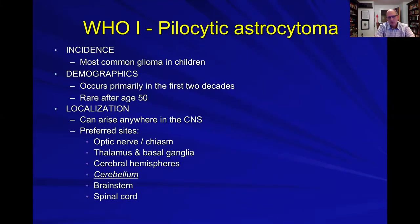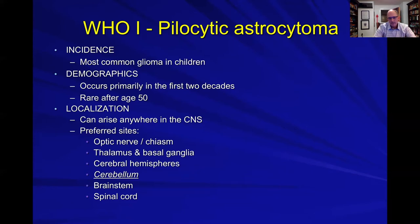Here's a prototypical WHO Grade 1 glioma: the pilocytic astrocytoma. It's much more common in children, occurring primarily in the first two decades. It can arise anywhere in the CNS, but preferred sites include the optic nerve, thalamus, hemispheres, cerebellum, brainstem, and spinal cord.